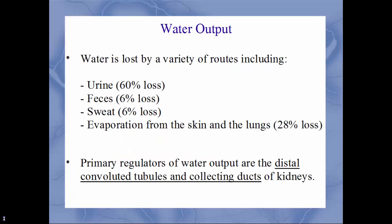For water output, the biggest loss is urine at about 60%. There is also water lost in feces at about 6%, sweat at about 6%, and evaporation from the skin and lungs during exhalation at about 28%. The primary regulators of water output are the collecting ducts and the distal convoluted tubules of the kidneys, both under hormonal control.